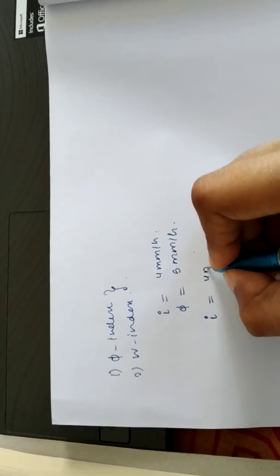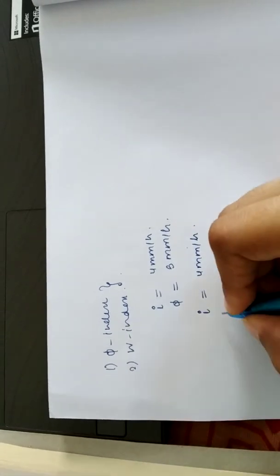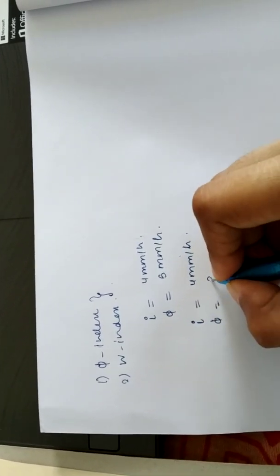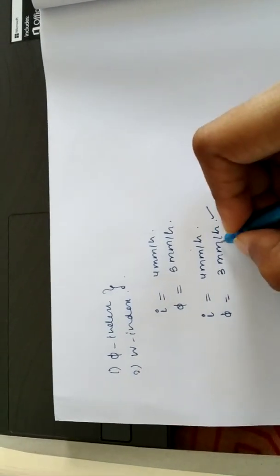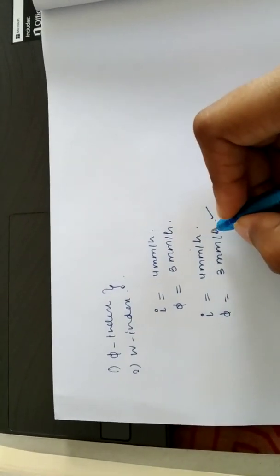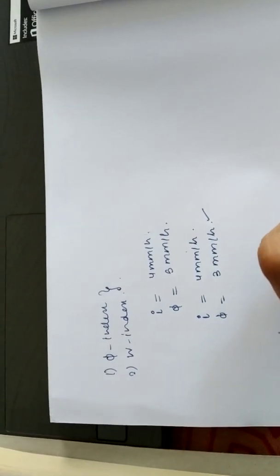I can also say if the intensity is 4 mm per hour and now phi index is 3 mm per hour, phi index is that value of rainfall above which you will get runoff. So you will get runoff corresponding to 1 mm.